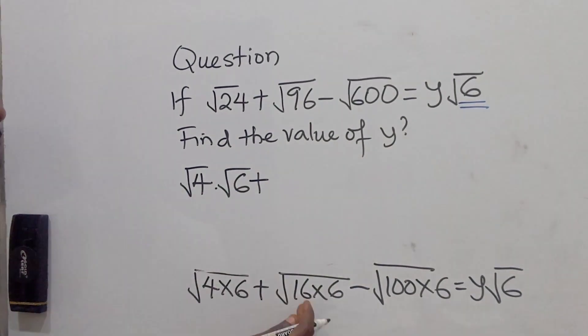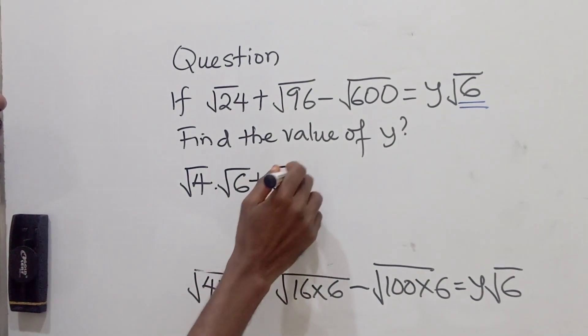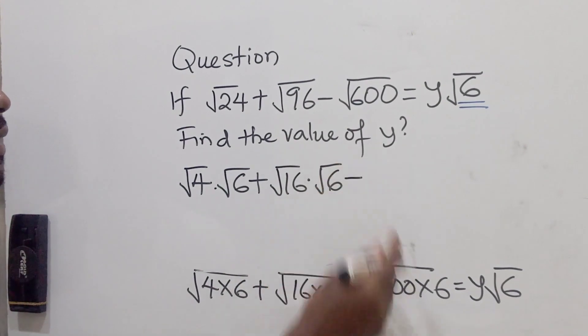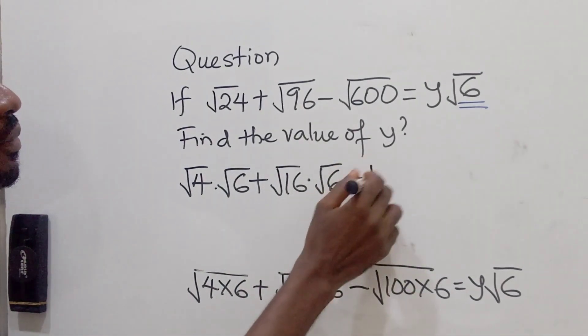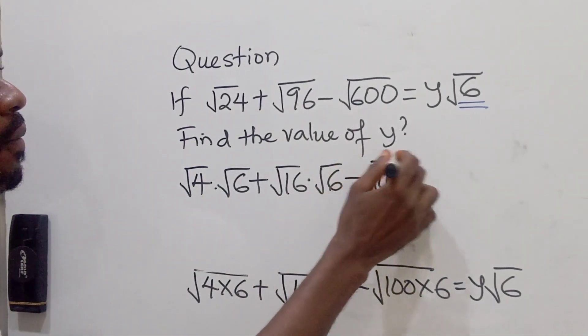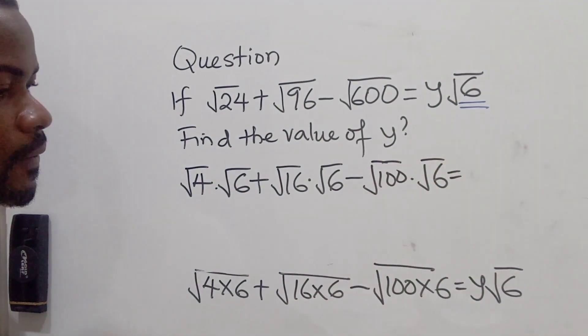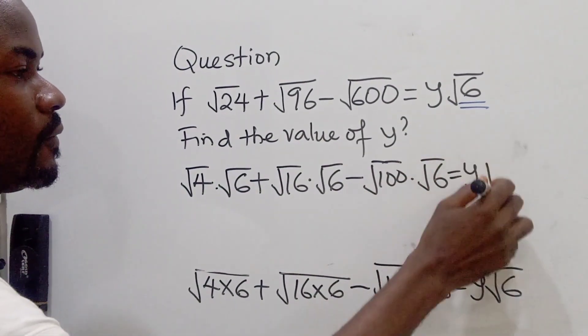So plus, this becomes, I have root 16 multiplied by root 6, minus root 100 multiplied by root 6. This is equal to what? We have y root 6.